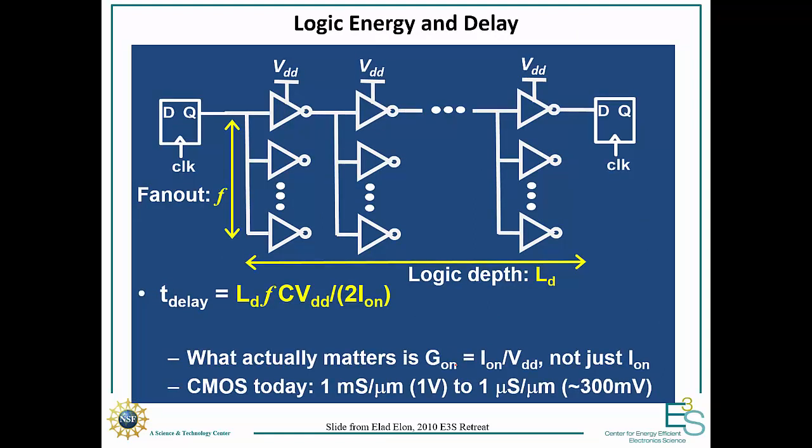And so using this, we can then estimate the delay and then use that to figure out what is the leakage power. So the delay through the circuit is going to be given by your RC time. So first we can ask, what's the capacitance? So our capacitance is going to be the capacitance of one transistor times the fan-out. And that's because you have to charge each of the additional transistors that you're driving. And then we also have a logic depth. And so what that means is that we're going through multiple stages, and so we have to just multiply by how many stages we go through.